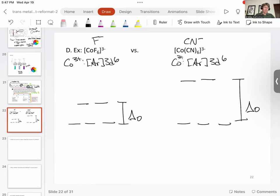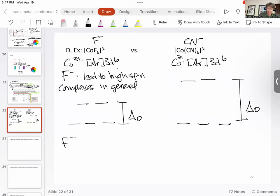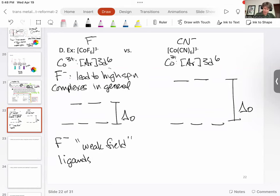What we're going to see here is that F minus is going to lead to high spin complexes in general. Because of that, and because of its smaller crystal field splitting energy, F minus is considered what's called a weak field ligand. Weak field ligands typically lead to high spin complexes.